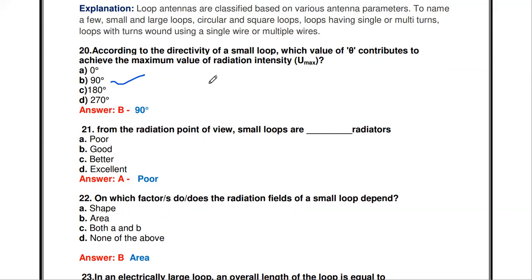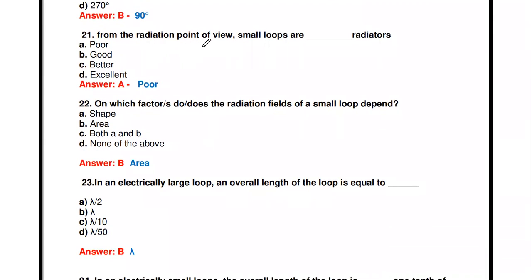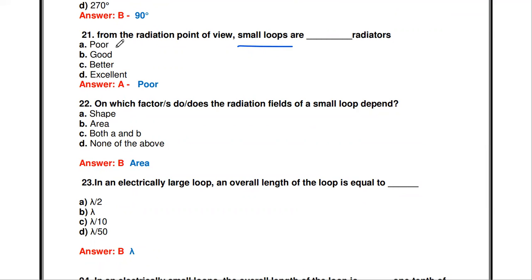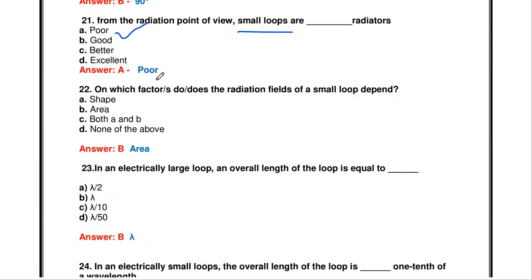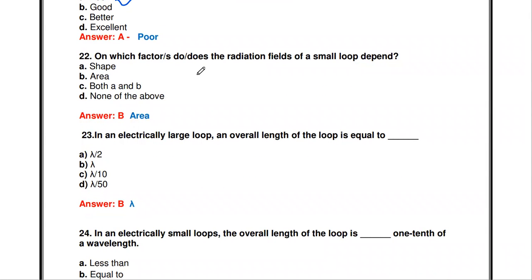From the radiation point of view, small loops are what kind of radiators? Based on loop size, loop antennas are classified as small loop and large loop. For a small loop antenna, the answer choices include poor radiator, good radiator, better radiator, and excellent radiator. Small loops are poor radiators.